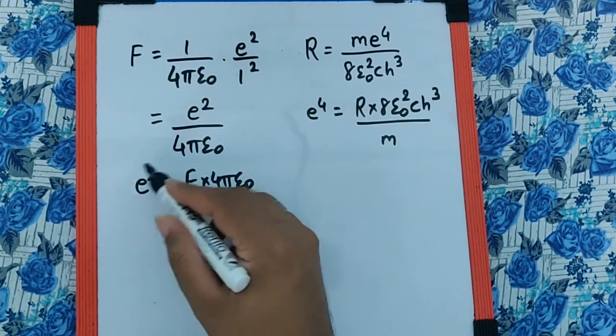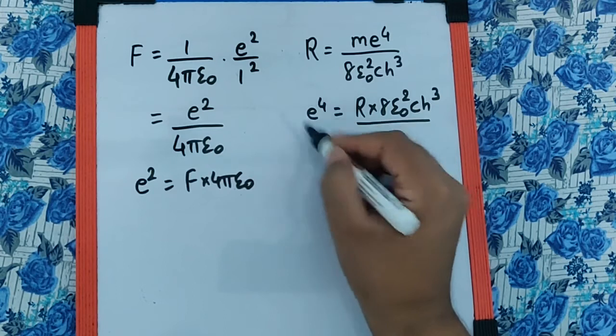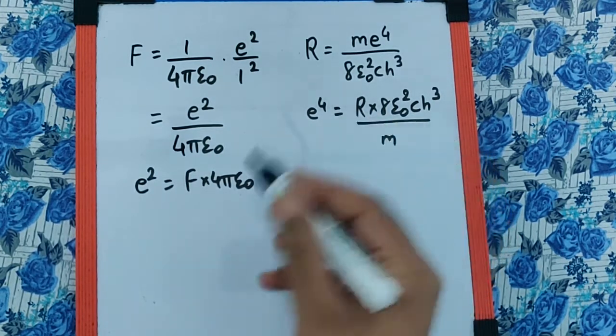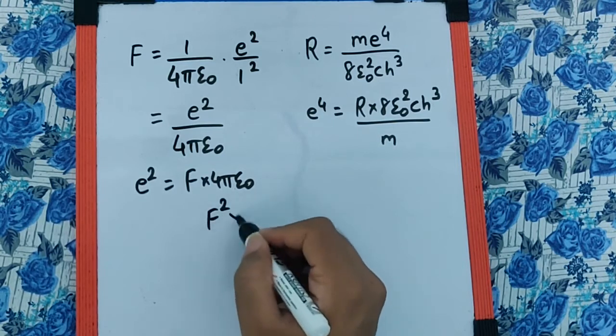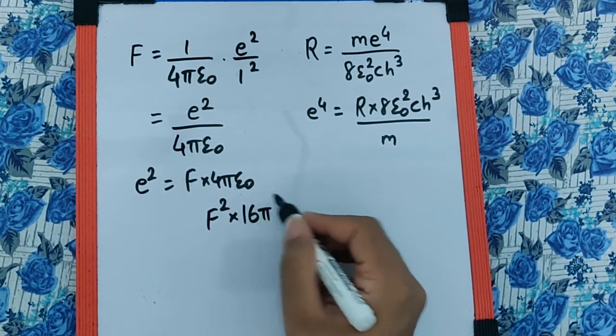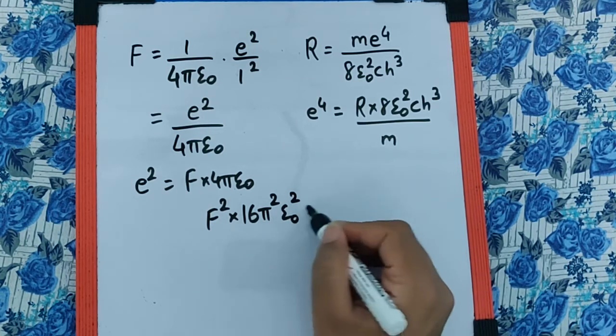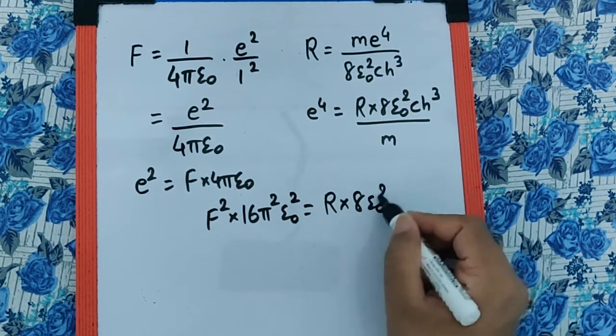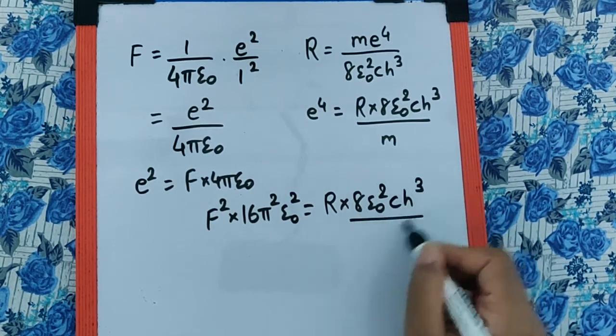So now can I say e² times e² will be e⁴, and that means we need to square this and then equate this. So I can say it is going to be F² into 16π² ε₀², which is equal to R into 8ε₀² CH³ the whole upon M.